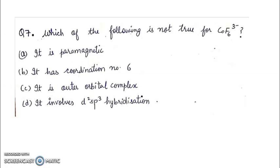Question 7. Which of the following is not true for CoF6 3-? It is paramagnetic. It has coordination number 6. It is outer orbital complex. It involves d2sp3 hybridization. Right answer will be D. Because it has sp3d2 hybridization.